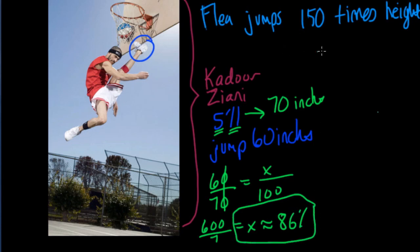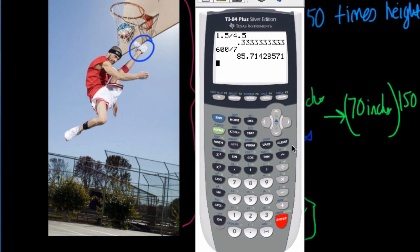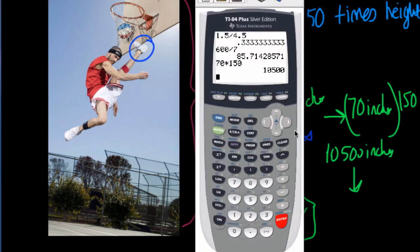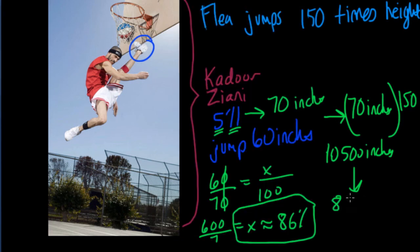But if he had the power of the flea to jump, what would that mean? Well, if he has a 70-inch height, and he could jump 150 times that, you just multiply. And that would be how high he can jump. Let's just do that calculation real quick. 70 times 150. So he would be able to jump 10,500 inches. Let's write that down. So if we had that flea power, he could jump this high. And you can keep extending the question. I mean, how many feet is that? Well, divide by 12. 875 feet. That's kind of amazing.